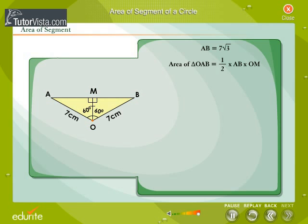Area of triangle OAB is equal to half into base into altitude, that is equal to half into AB into OM. We use the value of root 3 as 1.73. Area of triangle OAB is equal to 21.2 cm².